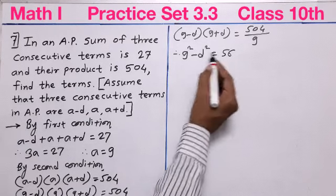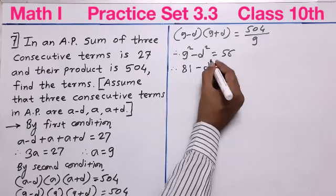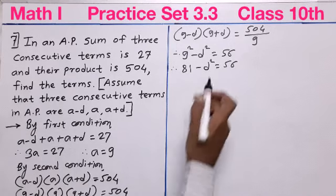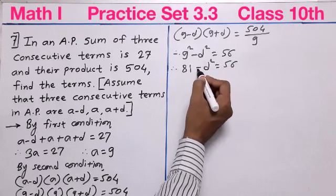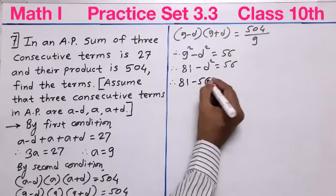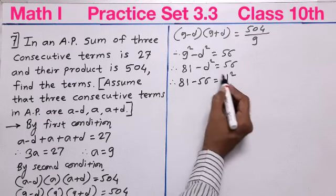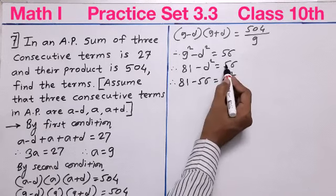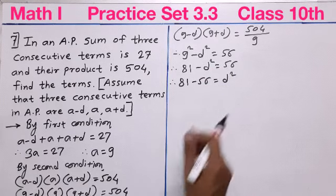So 81 minus D squared = 56. Shifting negative D squared to the right and 56 to the left, we get 81 minus 56 = D squared. This step should not be difficult.